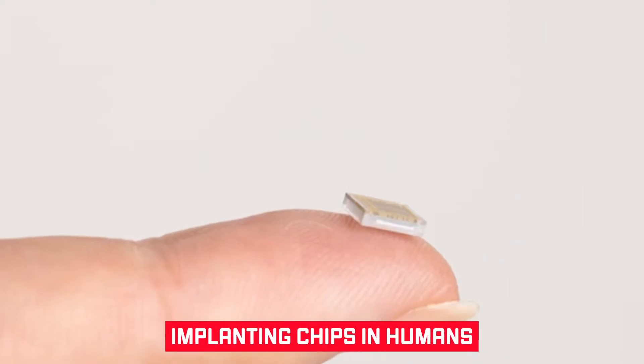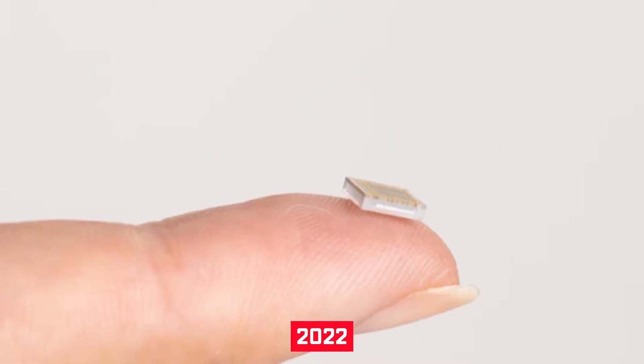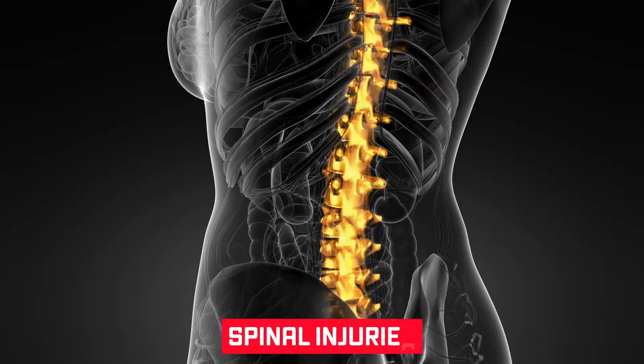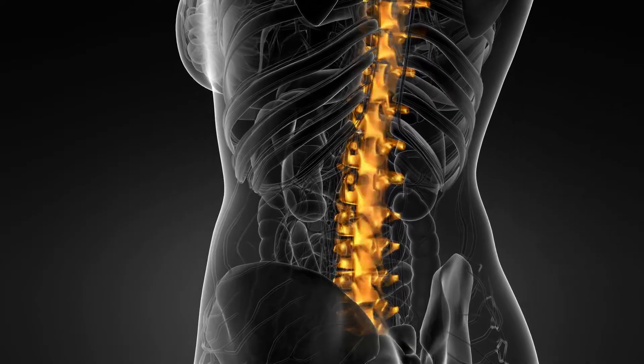Elon Musk claims that Neuralink will be able to begin implanting chips in humans as early as 2022. People who have suffered spinal injuries would be eligible to receive the technology that the millionaire believes will allow them to walk again.